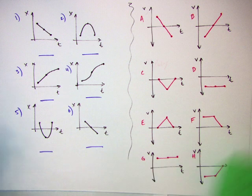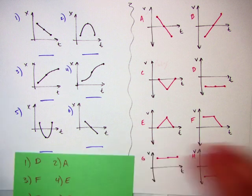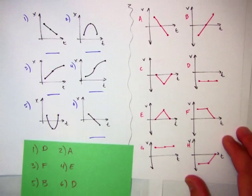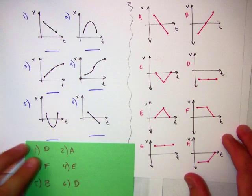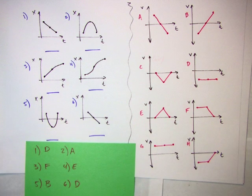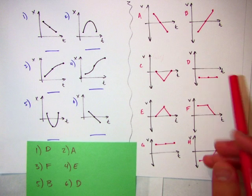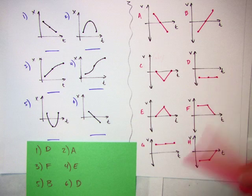Okay, here are your answers. One thing I want you to notice is that one and six, the velocity time graph is the same. It's D in both cases, constant negative velocity.